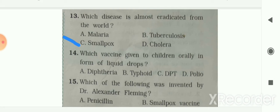Question 14: which vaccine is given to children orally in the form of liquid drops? Options are diphtheria, typhoid, DPT, and polio. Polio vaccine is given to children orally in the form of liquid drops. Your answer is option D — polio.